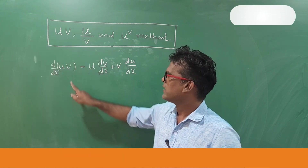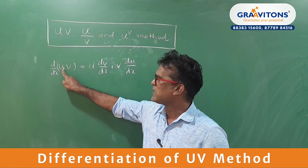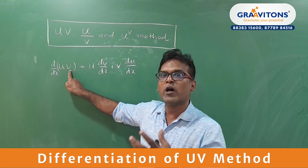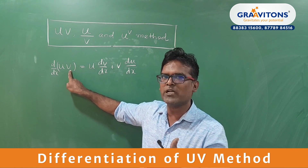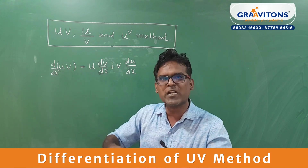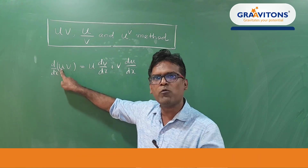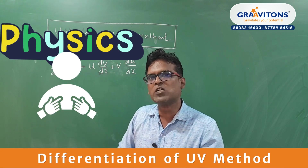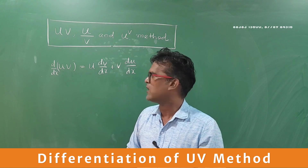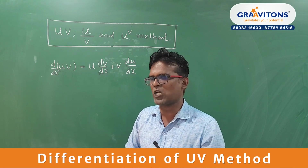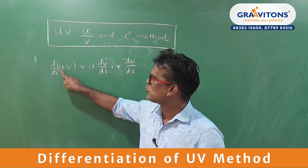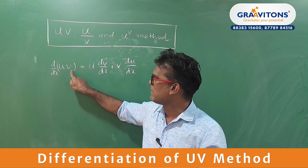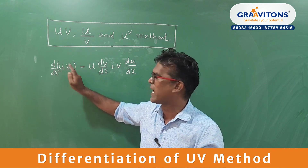For example, there are two students — one is called u and another one is v. They are coming to learn and clarify doubts from a teacher, and they have different subjects. u has a mathematics doubt and v has a physics doubt. So how will they clarify their doubts with the teacher? They cannot both ask at the same time. So first u should clarify his doubt, and v has to wait. Then v will clarify his doubt while u has to wait.